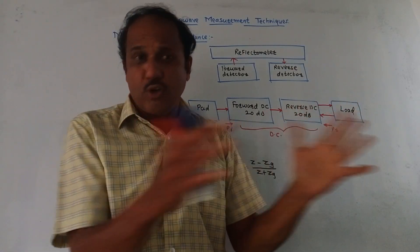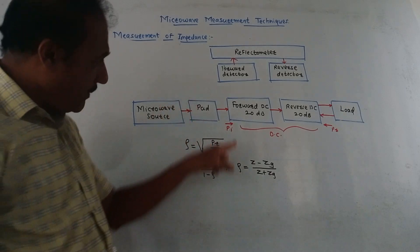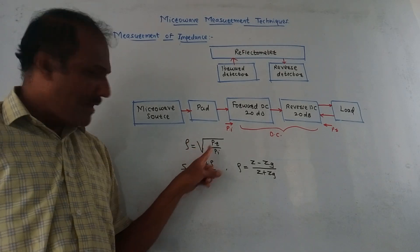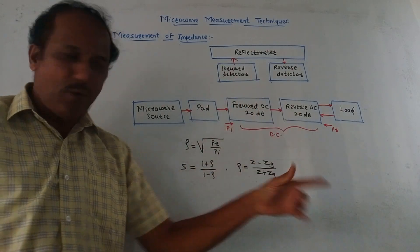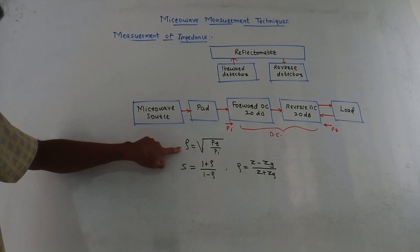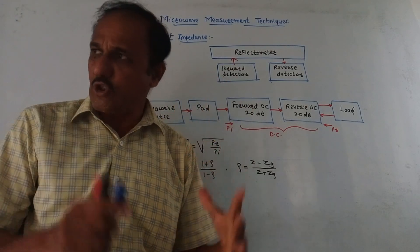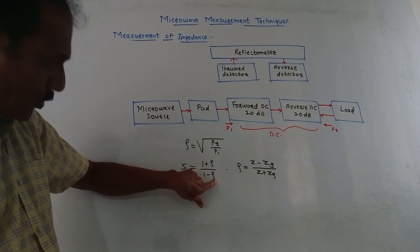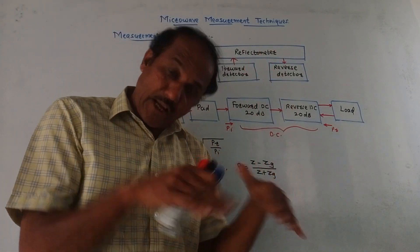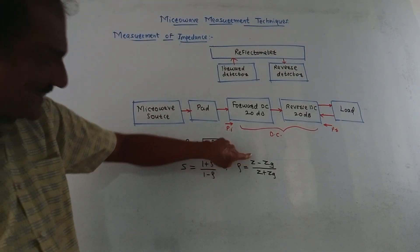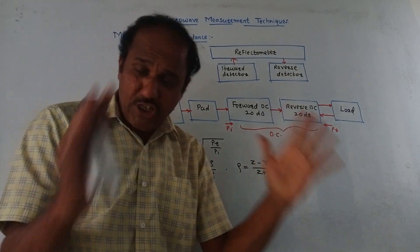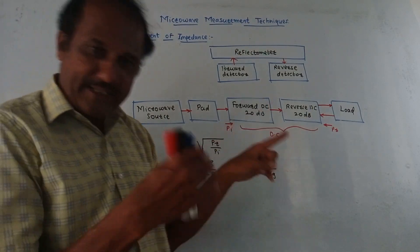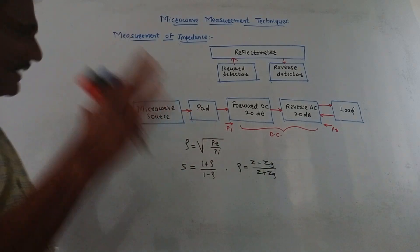Due to the property of the directional coupler, the forward and reflected power waves do not get mixed up. By measuring the incident and reflected power, we calculate the reflection coefficient ρ = √(PR/PI). Once ρ is known, the standing wave ratio S = (1 + ρ)/(1 − ρ). The unknown impedance Z_g can then be found using ρ = (Z_g − Z)/(Z_g + Z), where Z is the known impedance at the load. This is how the reflectometer is used to measure impedance.